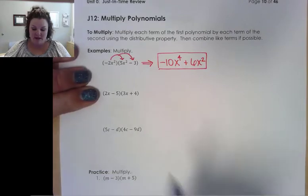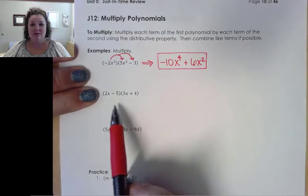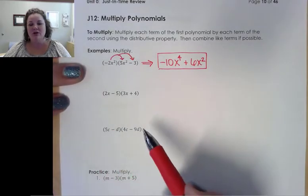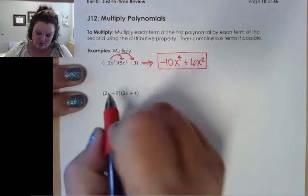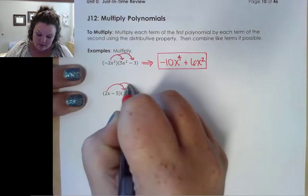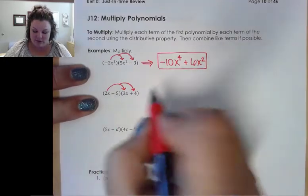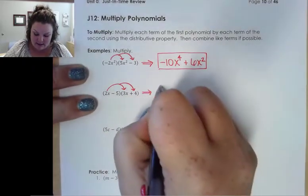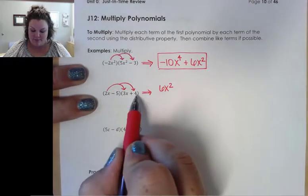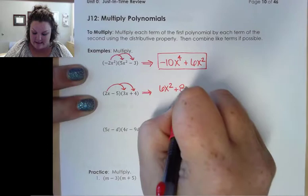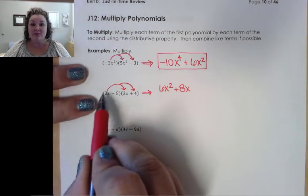All right, on the next one, instead of having one term times two terms, we have two terms times two terms. So a binomial times a binomial. You may have learned the FOIL method, that's totally fine, or you can simply distribute each term of the first times each term of the second. So I'm going to start with 2x. 2x times 3x is going to give me 6x squared, and then 2x times 4 is going to give me a positive 8x.